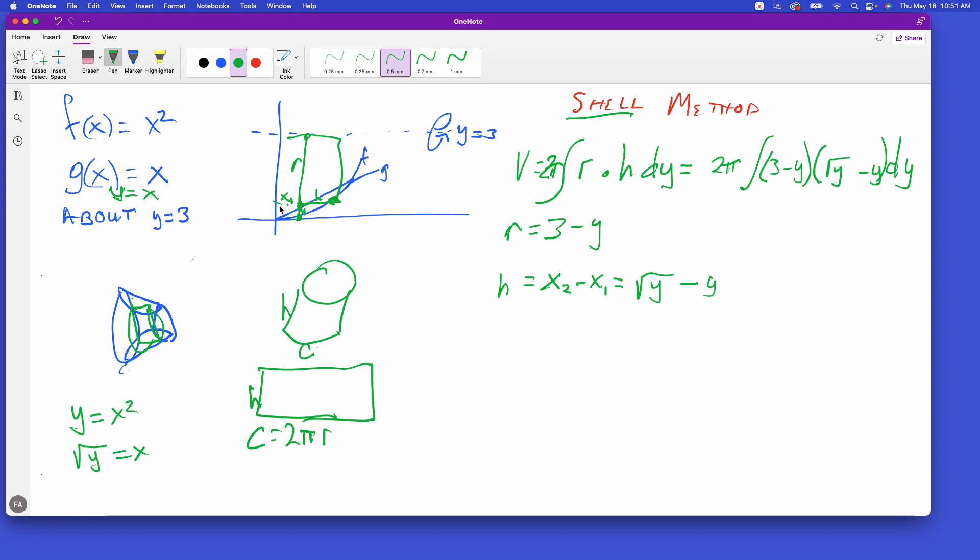Now what are these locations where we're counting from to to? We have the intersection point here and that one right there. Once again, we just need to take our two equations and set them equal to each other. So x squared is equal to x, so that's x squared minus x equals zero, which factors into x times x minus one equals zero. So x is equal to zero and x is equal to one. This is going from zero to one there.